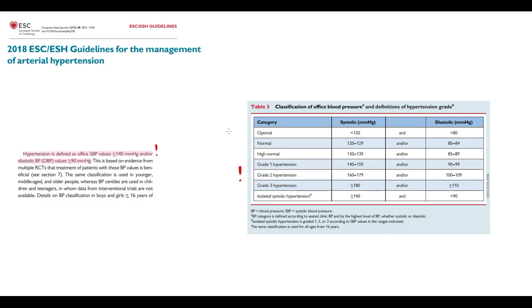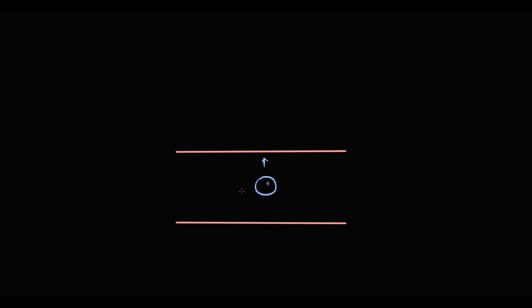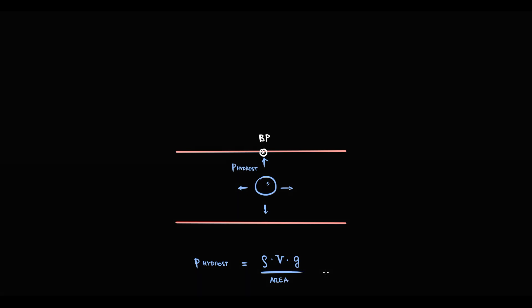To explain the logic behind antihypertensive drugs we have to recall normal physiology. Inside blood vessels we have blood, which is a fluid. As any fluid, blood has hydrostatic pressure that acts in all directions, including on the blood vessel wall. This is exactly what we measure during standard blood pressure examination. Hydrostatic pressure is directly proportional to fluid density, fluid volume, and gravity constant, and inversely proportional to the area on which it acts.